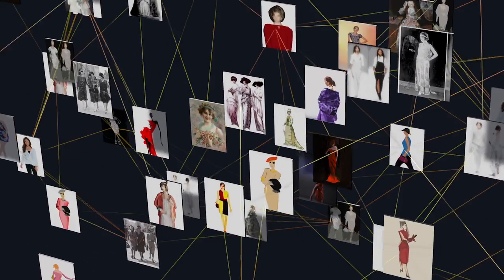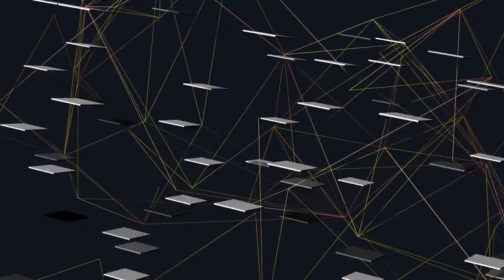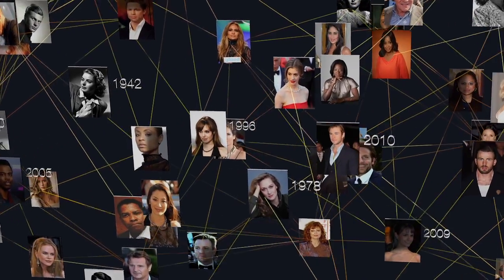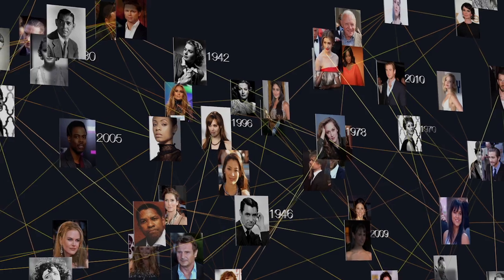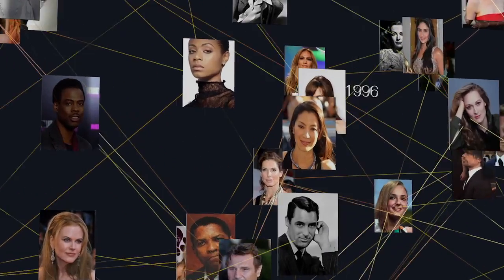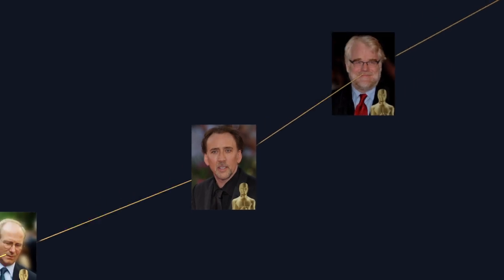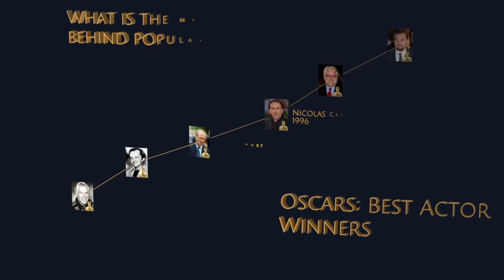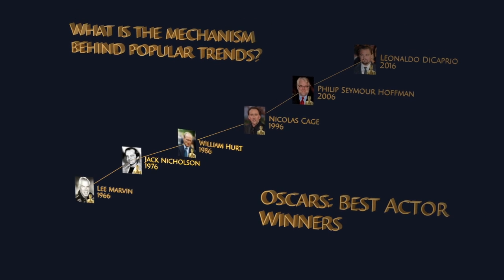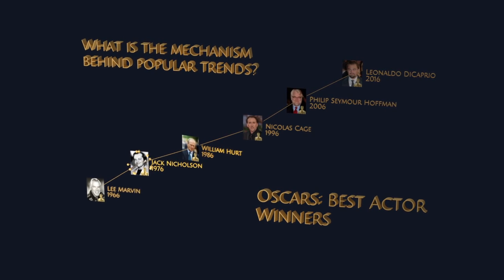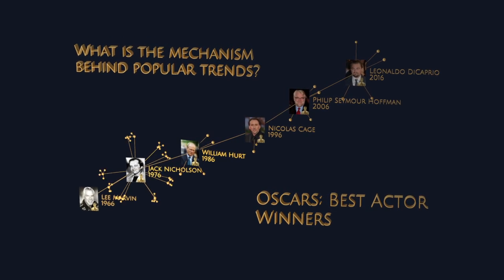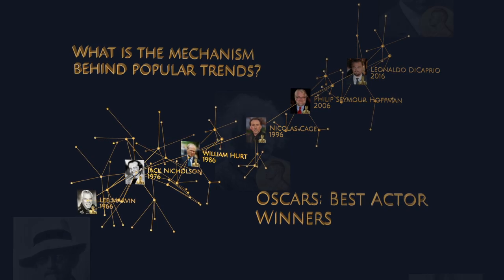Trends change rapidly. This is readily observed in fashion tastes, the list of most popular celebrities, or disruptive technologies such as online social networks reshaping how people interact. A key question arises: what is the mechanism behind popular trends? To answer this question, we consider how stars—that is, vertices with many connections—emerge in complex networks.